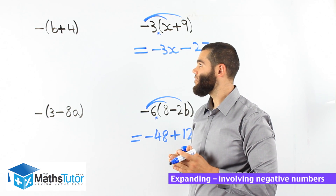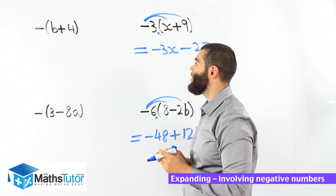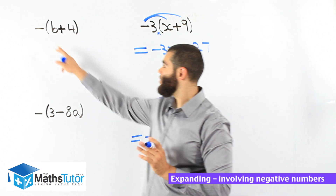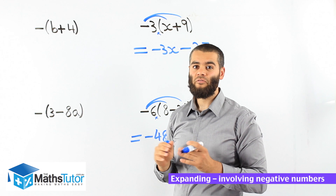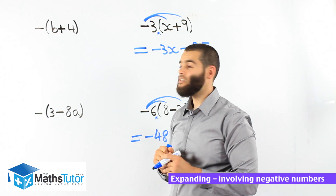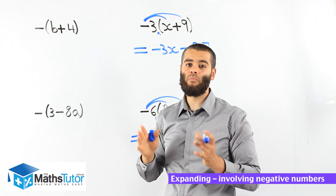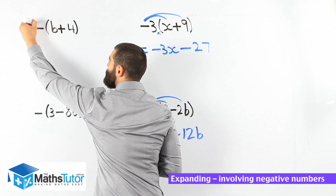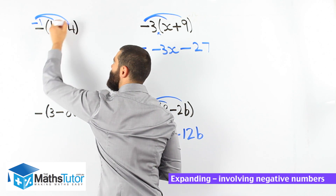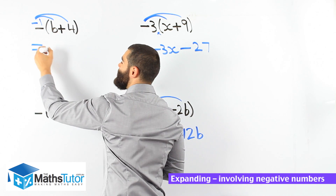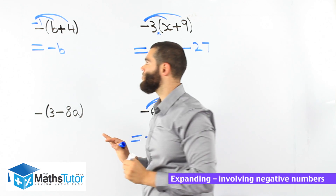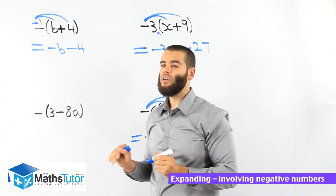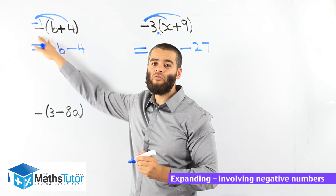Look at this one — it says negative, then open bracket b plus 4, close bracket. What do you notice? There is no numeral; it's just a negative. But in fact it actually means negative 1. So whenever you see a negative like that, you know straight away there's an invisible 1. Negative 1 times b is negative b, and negative 1 times 4 is negative 4. So the final answer is negative b minus 4.